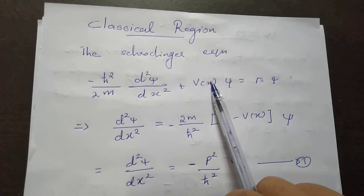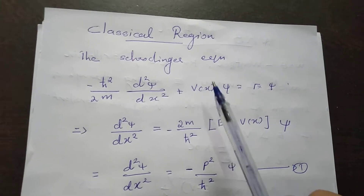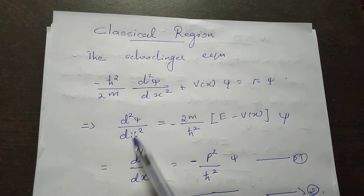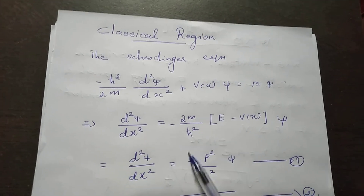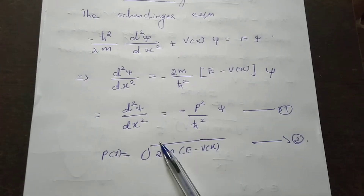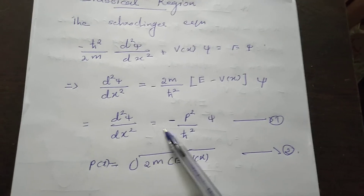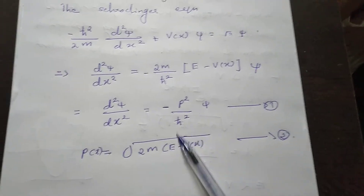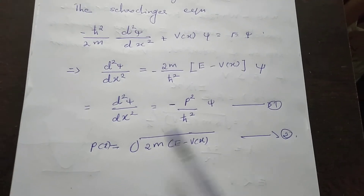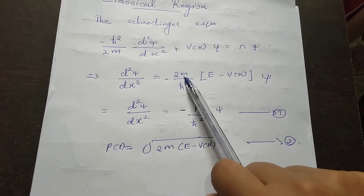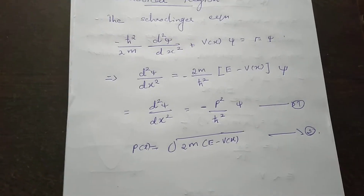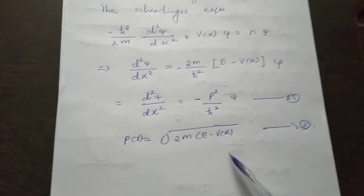And V(x) will be the potential energy of the system. Which can be written as: d squared psi by dx squared is equal to minus 2m by h-cut squared times (E minus V(x)) psi. Or, d squared psi by dx squared is equal to minus p squared by h-cut squared times psi. Put it as equation number 1, where p(x) is equal to the square root of 2m times (E minus V(x)). Then we have equation number 2.